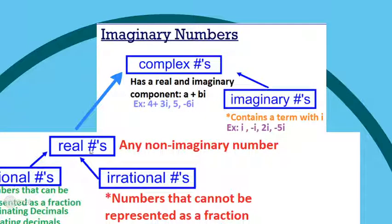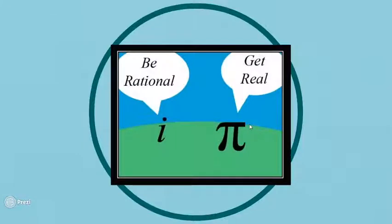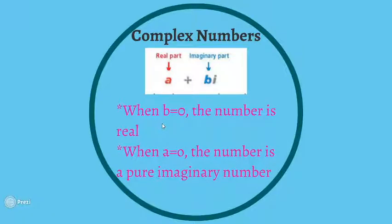Complex numbers have a real component and an imaginary component. A subset of complex numbers are real numbers, and the other subset are imaginary numbers — those are only numbers that contain i. If a number doesn't have an i, it's not imaginary. There's also a fun board slapper: i is telling pi to be rational, because pi is irrational, and pi is telling the imaginary number to get real, because it's not real — it's imaginary!